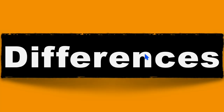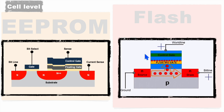Now let's see the differences between these two. The first difference is at the cell level — how EEPROM and flash memories are constructed at cell level. Here you can see the EEPROM has two gates: one is for bit select and another is the control gate.